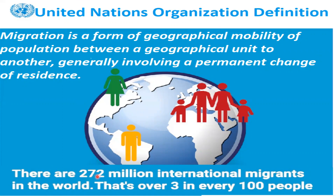The United Nations Organization defines migration as: migration is a form of geographical mobility of population between one geographical unit to another, generally involving a permanent change of residence. There are 272 million international migrants in the world — that's over three in every 100 people.